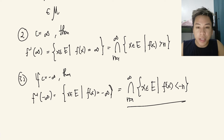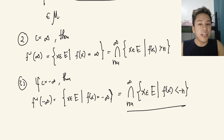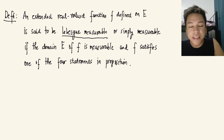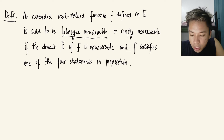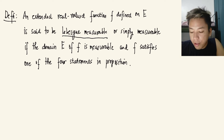This means statement 1 implies statement 5, and so statements 2, 3, and 4 also imply statement 5, since they are all equivalent to statement 1. So, an extended real-valued function f defined on e is said to be Lebesgue measurable — or simply measurable — if the domain e of f is measurable and f satisfies one of the four statements in the proposition.